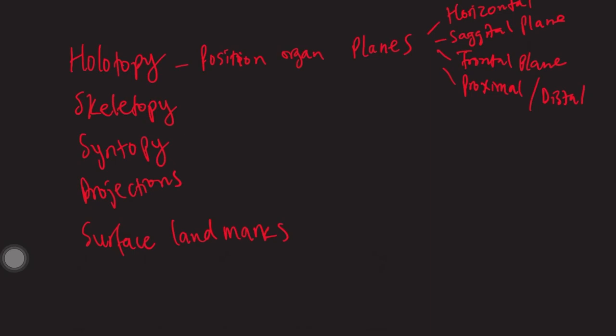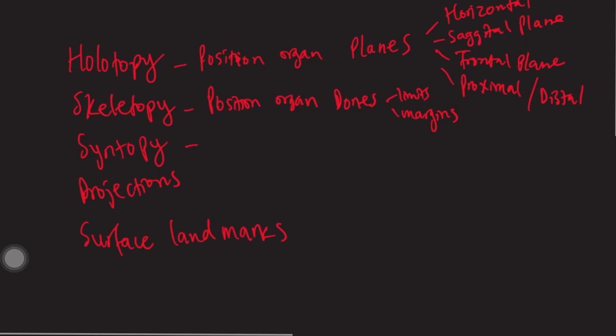Alright, skeletopy, this is the position of an organ in relation to the bones. What are the limits, and what are the margins of the organ, what are the upper borders, the lower borders, the left borders, the right borders, in relation to the bones, the rib cage, the vertebrae, as well as other bones like the clavicle.